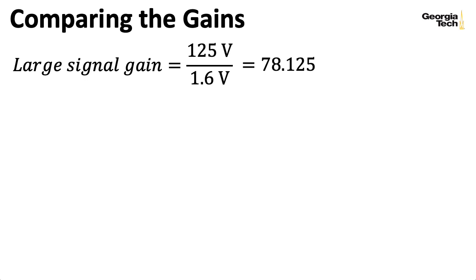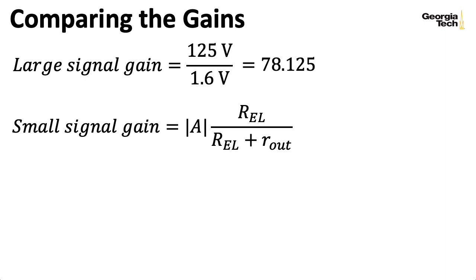We get a change of output of 125 volts for a change of input of 1.6 volts — our DC operating point was at minus 1.6, and we can go up to the zero volt line, so that's a change of 1.6. We define our large signal gain as that 125 volt output swing over the 1.6 volt input swing, giving us a large signal gain of around 78. Now, in a previous lecture we computed a small signal gain factor, and I'm putting in absolute value bars because the common cathode configuration is inverting, but I set everything up to give a positive number since amplifier designers describe gain as positive and everyone knows it's inverting.